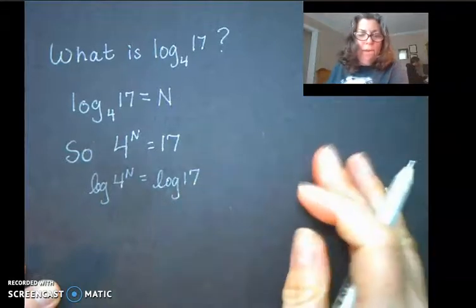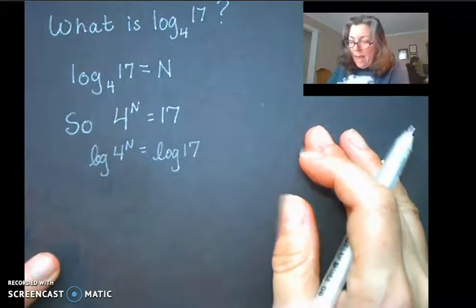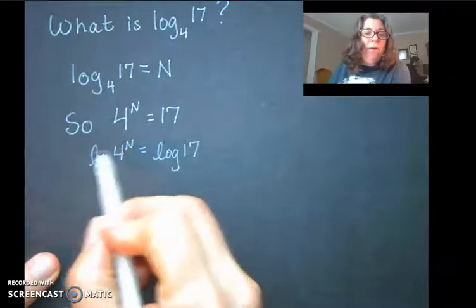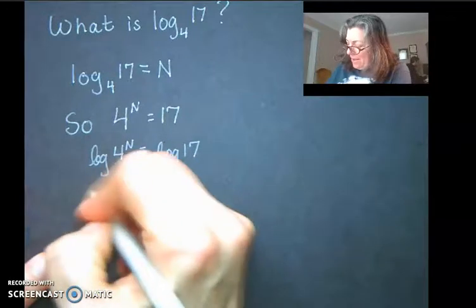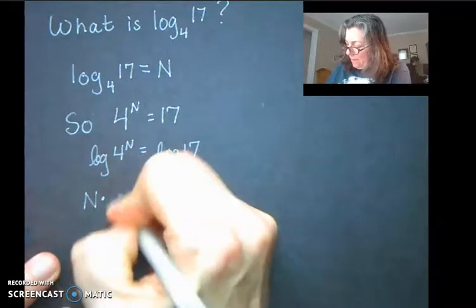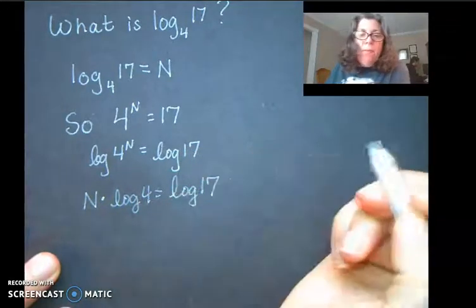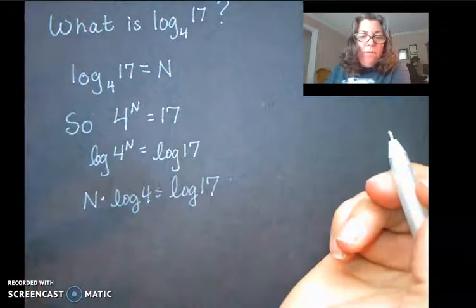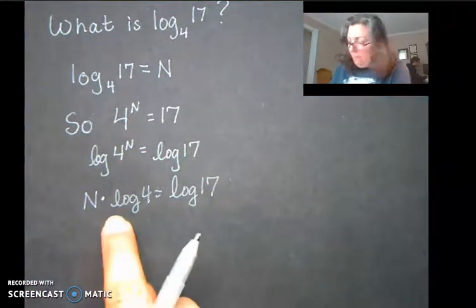Remember those properties you've been working on? This power can now come out and be a multiplier. That's the key here - it comes down and multiplies. And we wish we knew what N was, so the inverse of multiplying is divide.